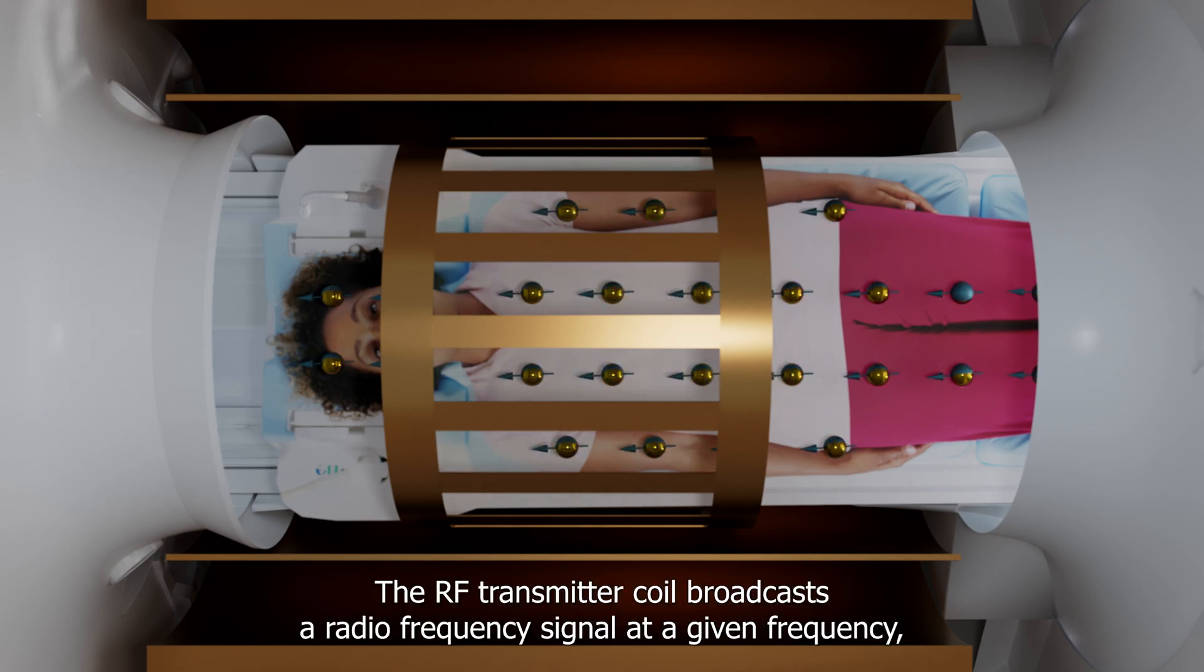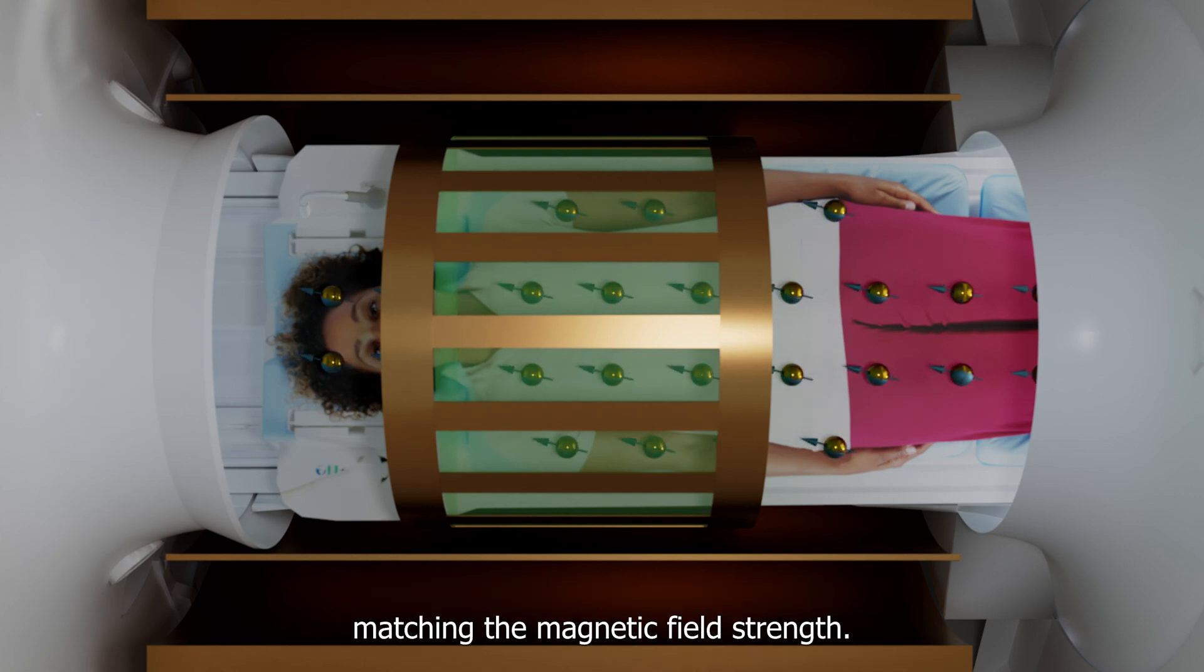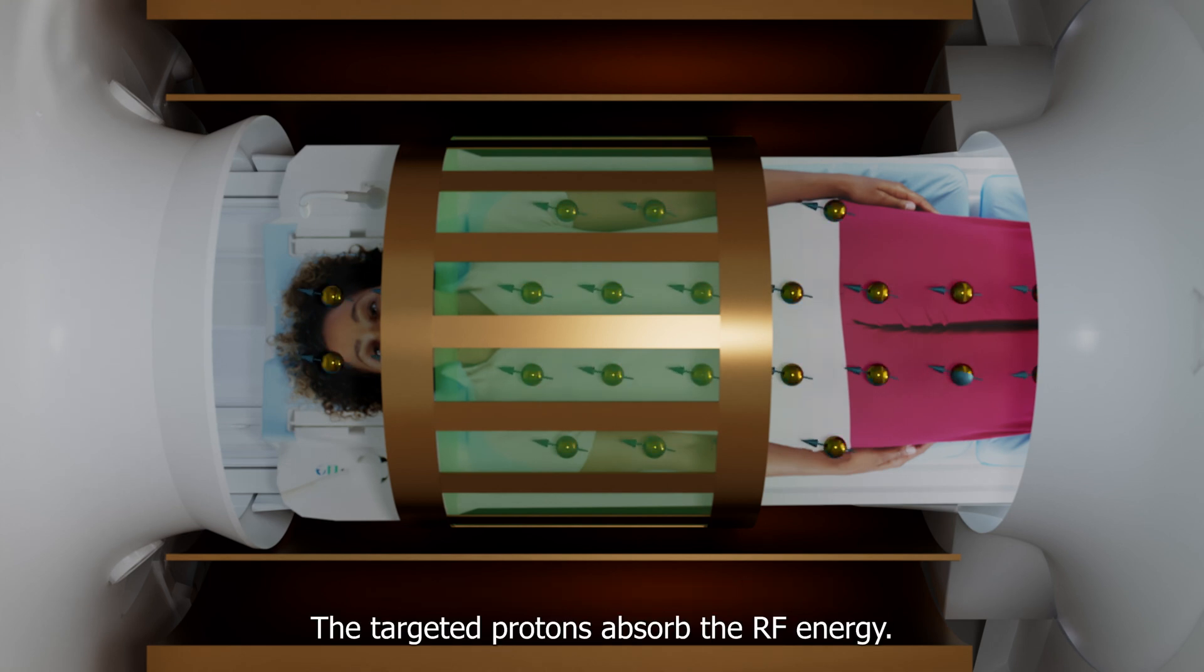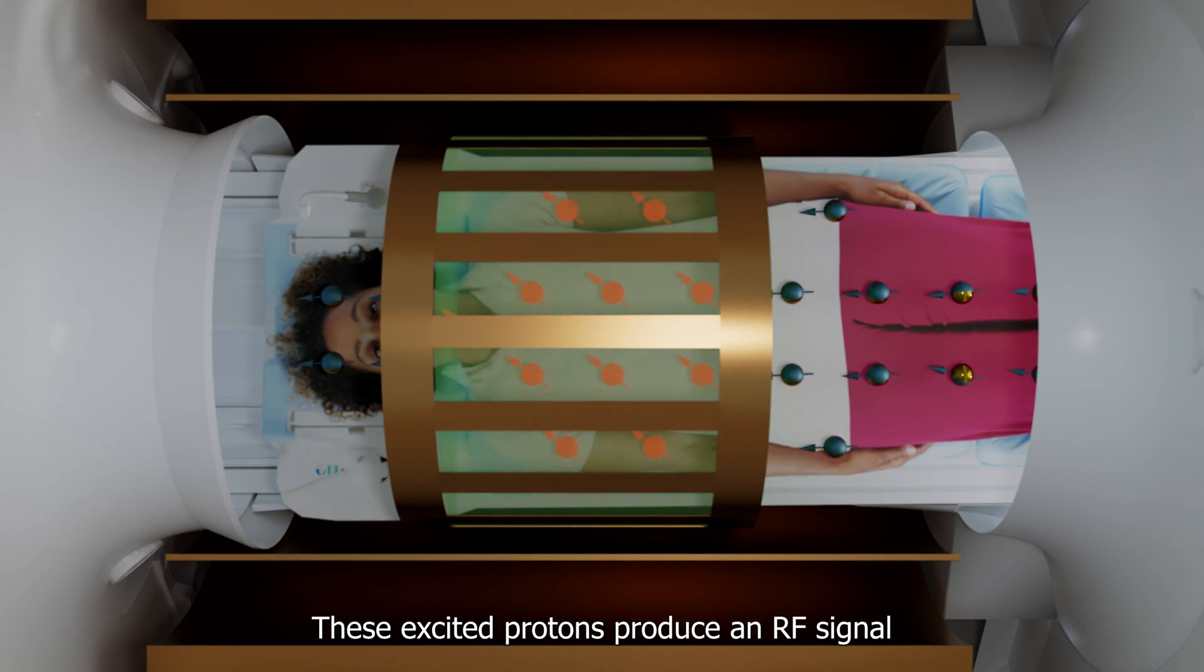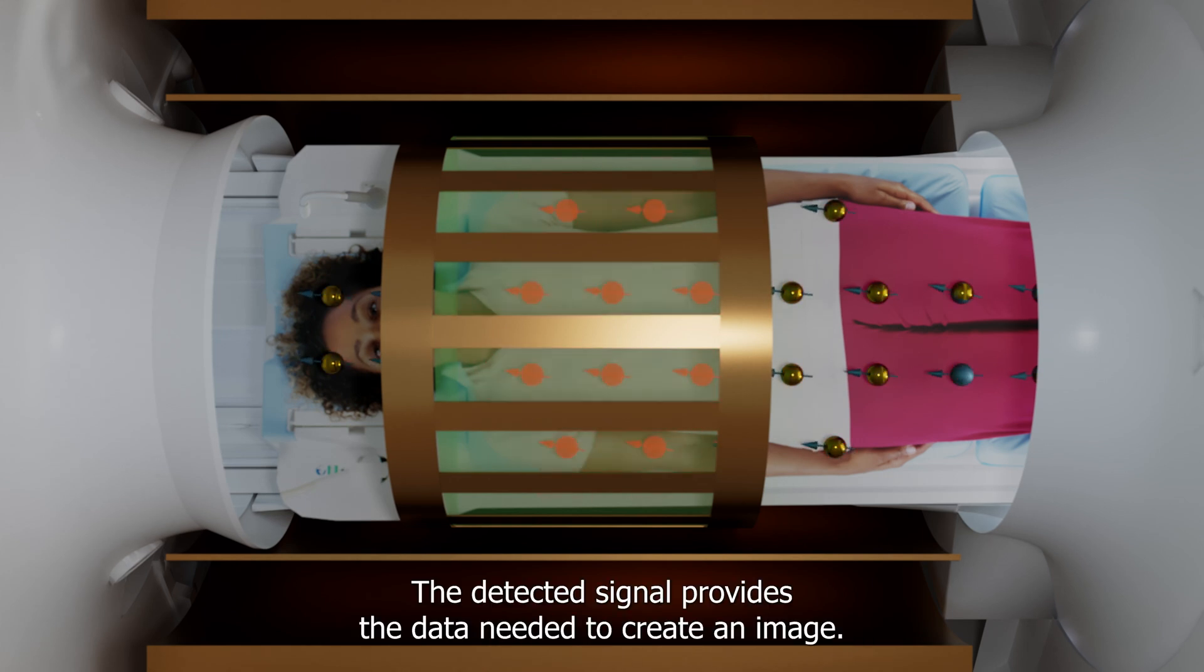The RF transmit coil broadcasts a radio frequency signal at a given frequency, matching the magnetic field strength. This matching frequency is known as the resonant frequency. The targeted protons absorb the RF energy. These excited protons produce an RF signal which is picked up by the RF receive coil. The detected signal provides the data needed to create an image.